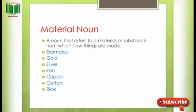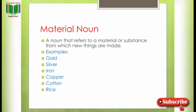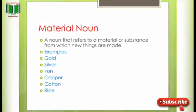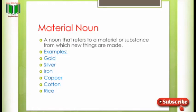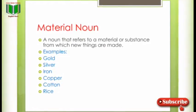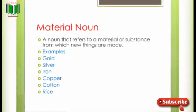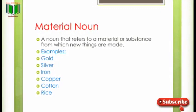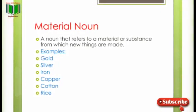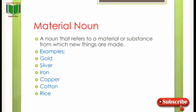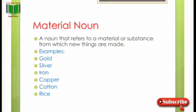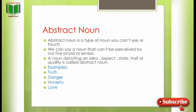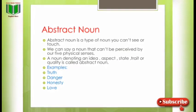Material noun — اس میں مادہ و جنس کو بولتے ہیں۔ A noun that refers to a material or substance from which new things are made. Material noun کوئی matter یا substance ہوتا ہے جس سے نئی چیزیں بنیں۔ Examples: gold, silver, iron, copper, cotton, rice — یعنی ہر وہ چیز جس سے کوئی نئی چیز بن جائے اور وہ matter یا substance ہو، اسے material noun کہتے ہیں۔